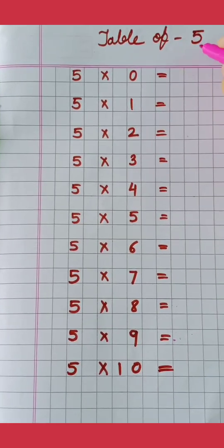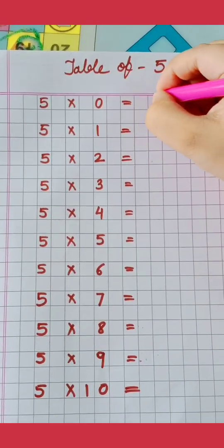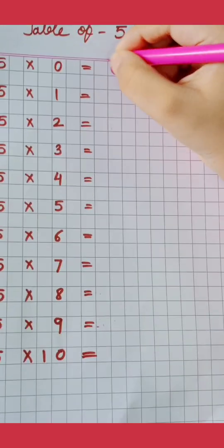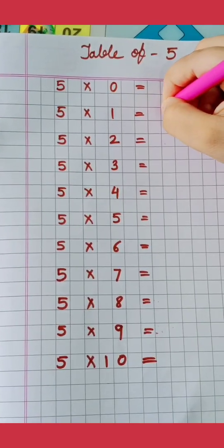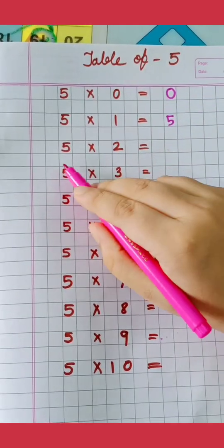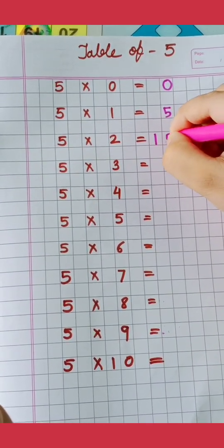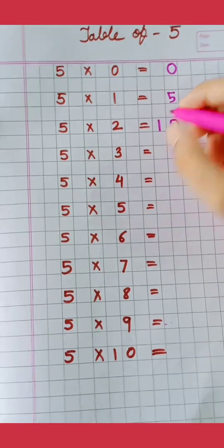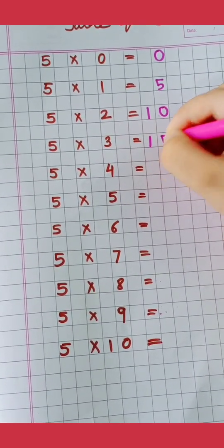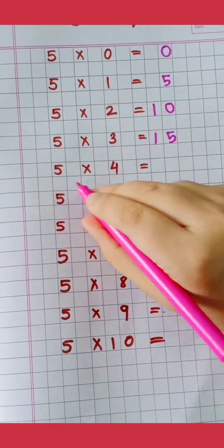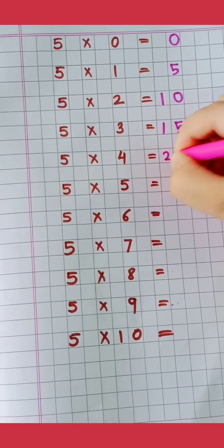Table of 5. 5 0's are 0, 5 1's are 5, 5 2's are 10, 5 3's are 15, 5 4's are 20.